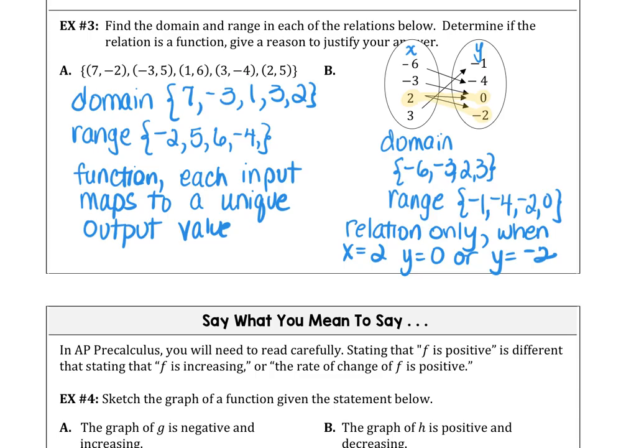I could also say something like this. We have a relation only because when our input value is 2, our output values map to 0 or -2. It is not a unique output value for the relation.